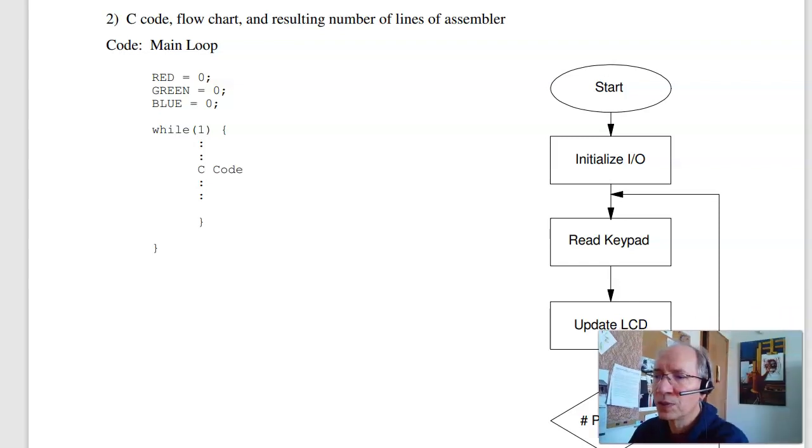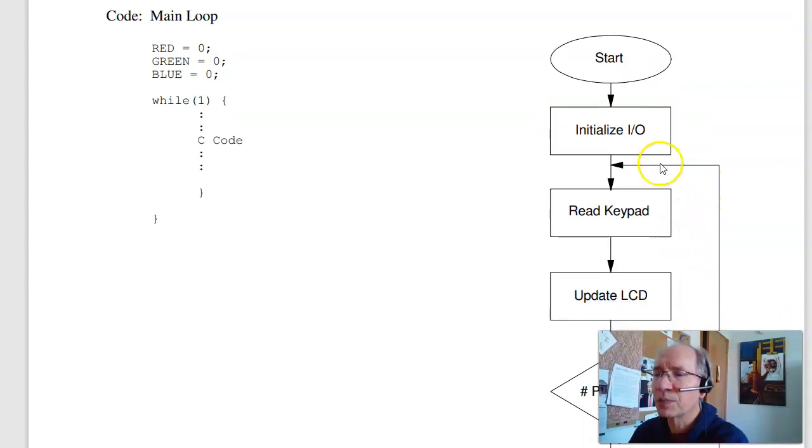So first I'm going to start with the flowchart. I'm going to initialize the IO. Port B is input for the push buttons. I've got port C as bits 0, 1, and 2 as output. Those are the columns. The rest are input. So I want to initialize the ports.